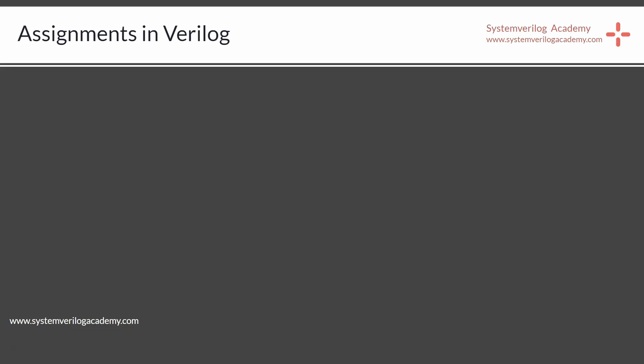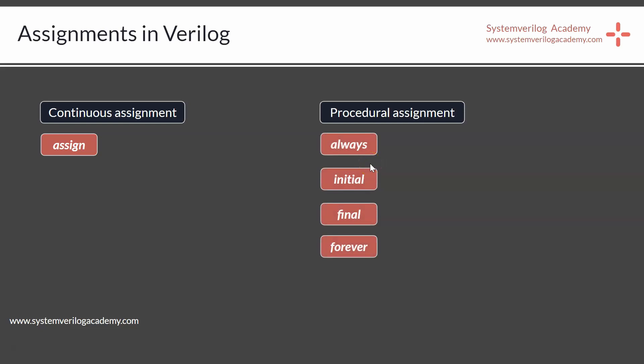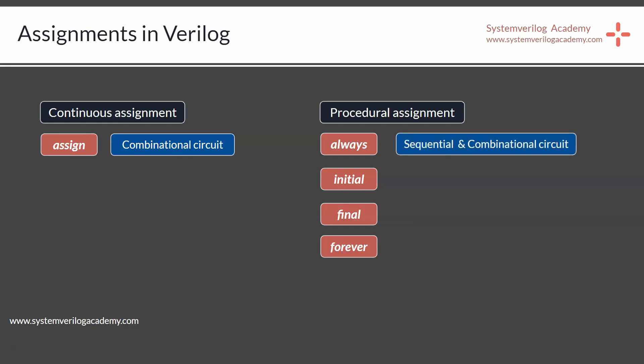Here is a summary of different assignment statements and the types of circuits inferred by them in Verilog HDL. There are two types: continuous and procedural assignments. The keyword assign implements continuous assignment. The keywords for procedural assignments are always, initial, final, and forever. The assign keyword is used to implement a combinational circuit and cannot implement a sequential circuit. An always keyword can implement either a combinational or sequential circuit, depending on how it is written.